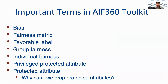Before entering the case study, let's revisit some important terms about AI ethics. Bias is a systematic error in an AI system that has been designed intentionally or not in a way that may generate unfair decisions. In the context of fairness, we are concerned with unwanted bias that places privileged groups at a systematic advantage and underprivileged groups at a disadvantage.